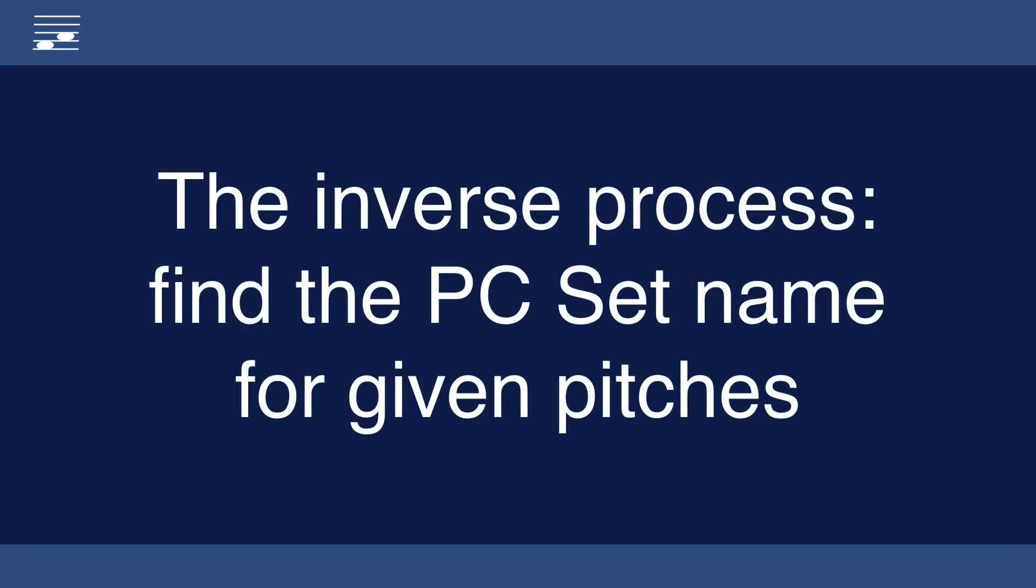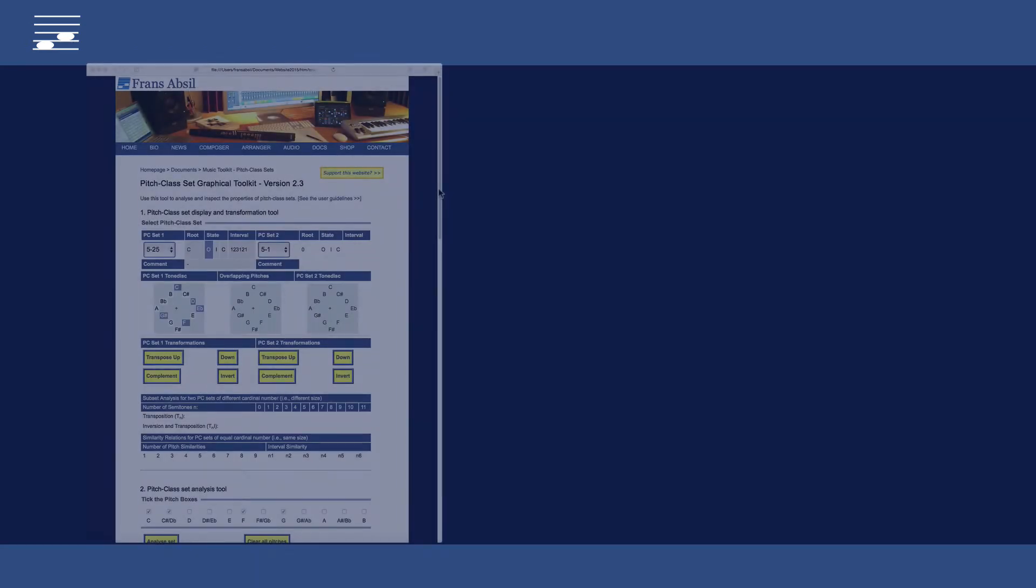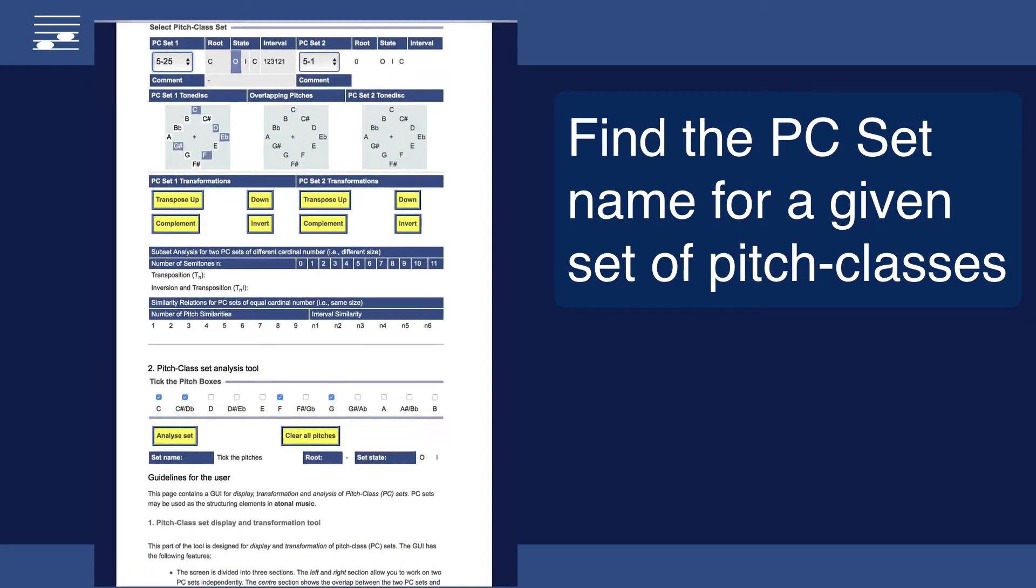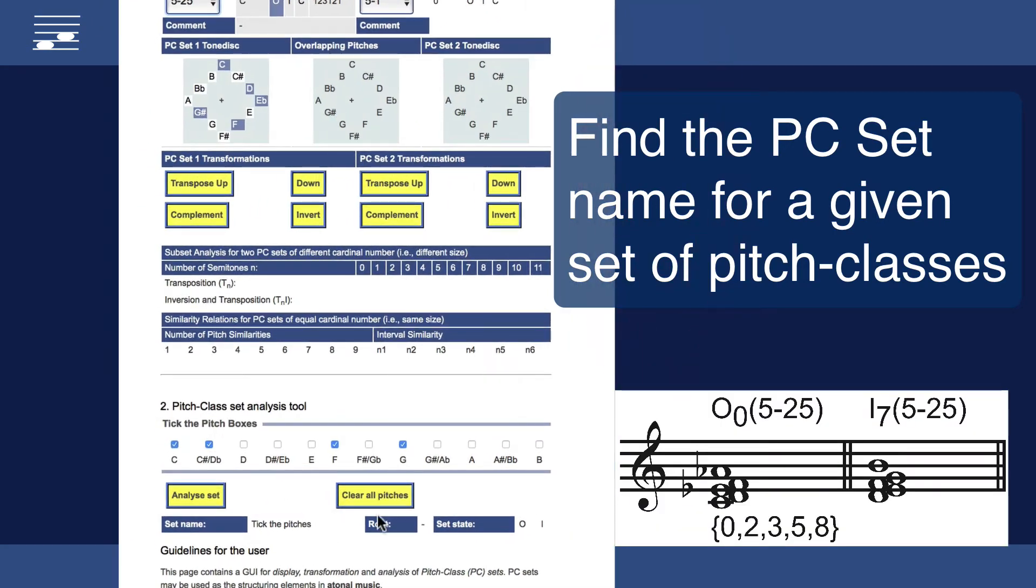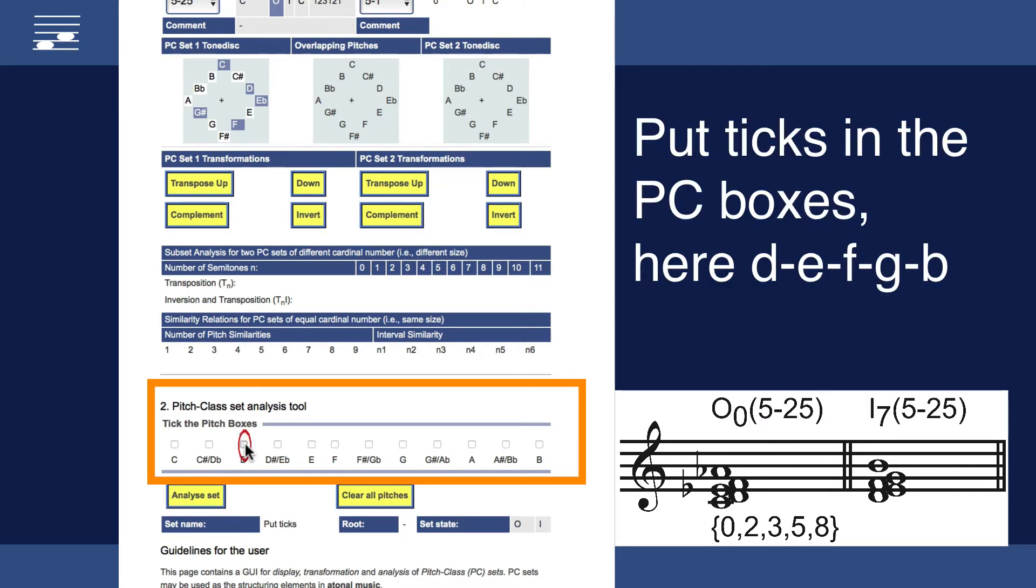Quite often we would like to know the pitch class set name for a given set of pitches. This inverse process is possible with the analysis tool. In this example I put ticks in the boxes for the pitches D, E, F, G, and B.